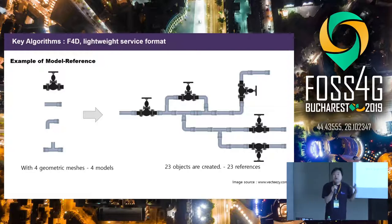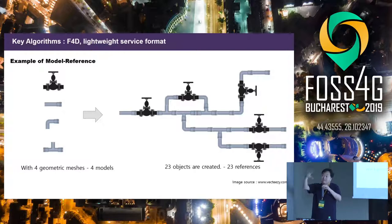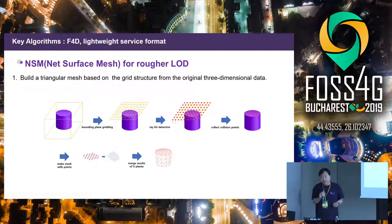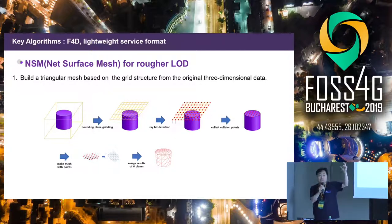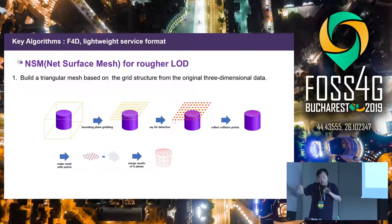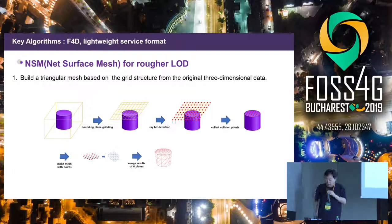One method to reduce file size: we handle artificial objects like CAD, IFC, and 3D GIS data, which contain lots of duplicated objects. We can reduce duplicated objects to just one using a model reference method. Another method we devised is NSM — near surface mesh. If we fly a virtual laser scanner around the object and adjust the resolution of collected points, we can generate low-level detail files at coarse resolution and very fine level-of-detail files at high resolution.